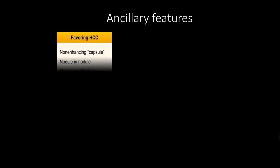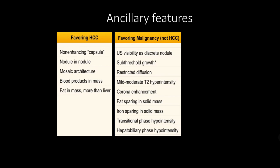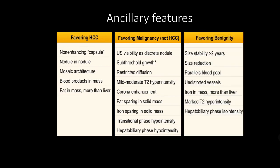Ancillary features can be used to upgrade or downgrade a category — for example, from LR2 to LR3, LR3 to LR4, or LR4 to LR3 — but only by one category. Importantly, ancillary features cannot be used to upgrade a lesion to LR5. Ancillary features are grouped into those favoring HCC, those favoring malignancy but not specifically HCC, and those favoring benignity.